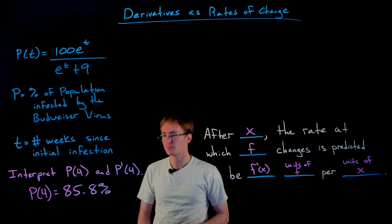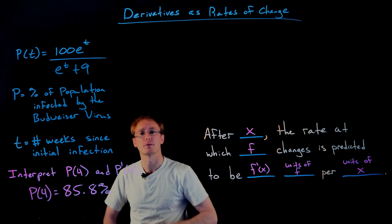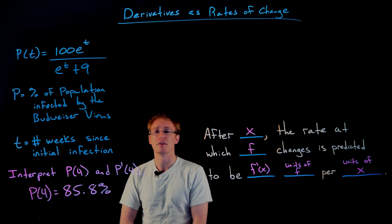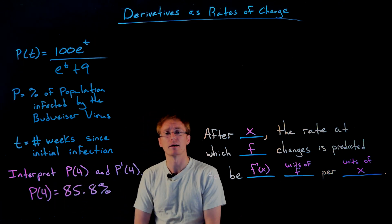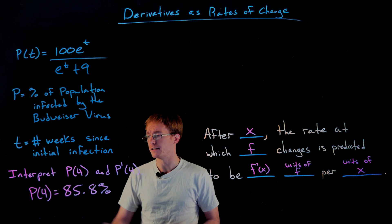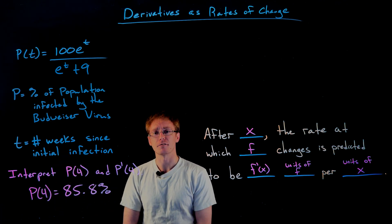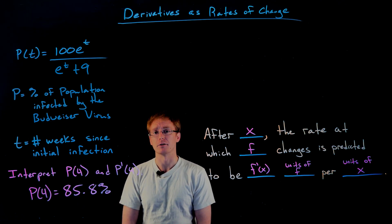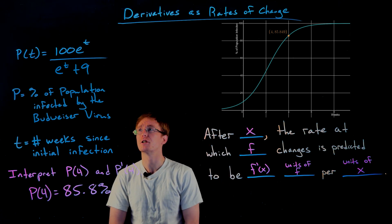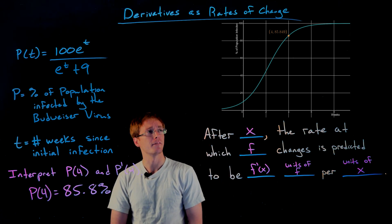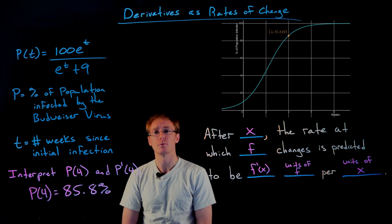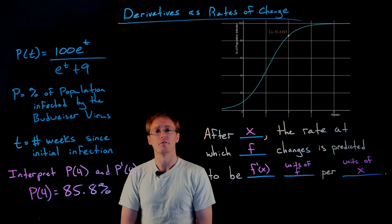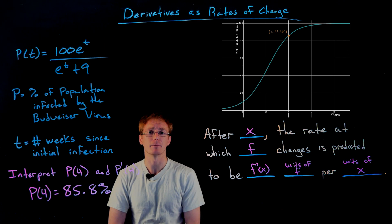Our focus here is learning how to interpret the derivative, but interpreting p of 4 = 85.8%: four weeks after the initial infection, about 85.8 percent of the population will be infected by the virus. Looking at the graph of p of t, we can find the point corresponding to p(4) = 85.8 percent and see the overall behavior of this function, though setting the scale correctly can be tricky.